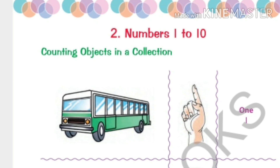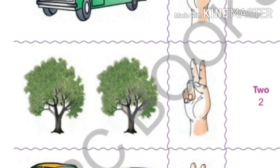Here you can see how many buses are here? Yes, only one bus. You can see one finger. Spelling is O-N-E. One.